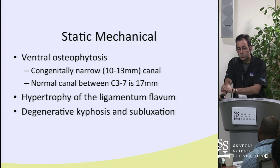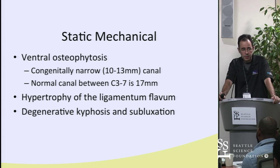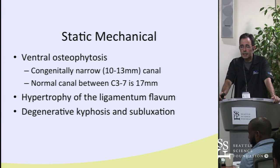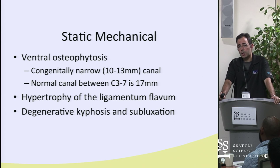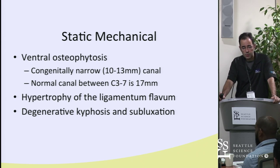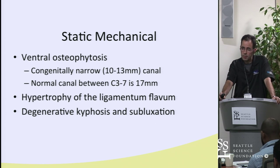Congenital canal stenosis refers to a spinal canal that is less than 13 millimeters. Ideally the canal should be greater than 13 mm. If the canal width is less than the AP width of the vertebral body, there is a good chance of congenital canal stenosis. This, combined with routine degenerative changes such as ligamentous hypertrophy, anterior height collapse resulting in kyphosis, or subluxation, can all be additive.